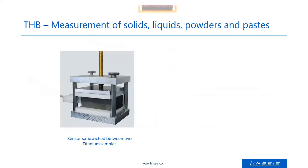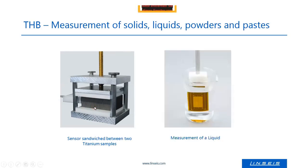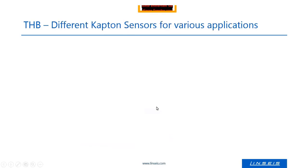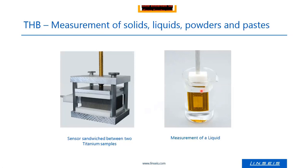The setup when you measure solids requires sandwiching the sensor between two sample halves — one on the top and one on the bottom — then applying a weight or pressing with a suitable device. For liquids, you can just put the sensor into the liquid. We also have special sensors with a metal frame around them for viscous liquids, pastes, powders, or loose samples that need the sensor stabilized.